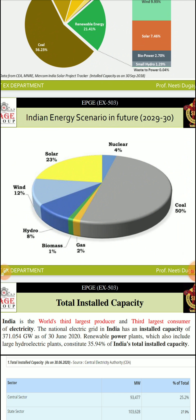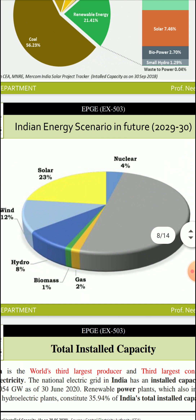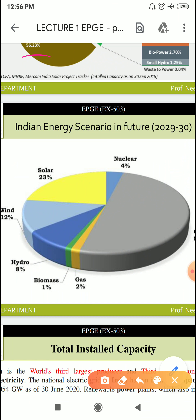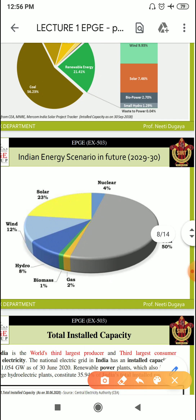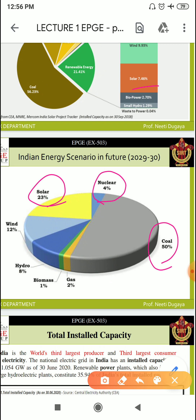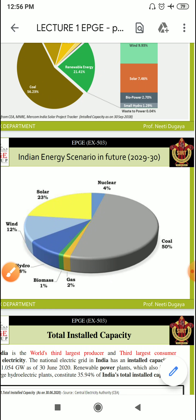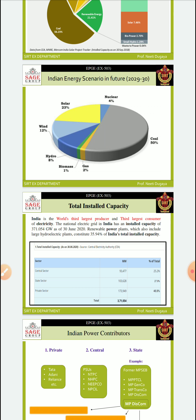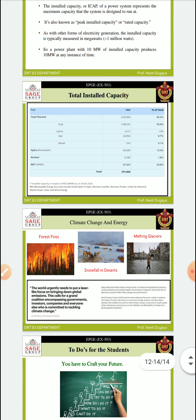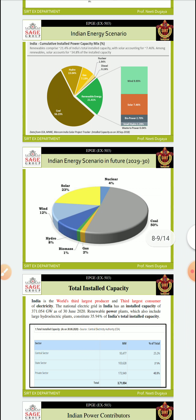Looking at India's future energy scenario towards 2030, coal is projected to reduce from 56.23% to around 50%, which is a positive sign. Solar will increase from 7.46% to 23%, nuclear from 1.4% to 12%, wind from 10% to 12%, hydro to 8%, biomass to 1%, and gas to 2%. This is the predicted future scenario for India's installed power generation capacity.